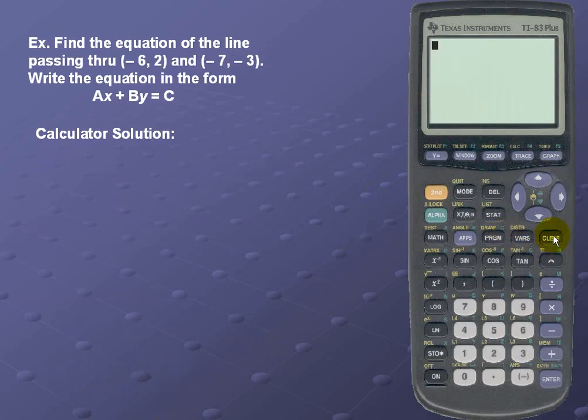Here's another example. Find the equation of the line that passes through (-6, 2) and (-7, -3). Here we'll write the equation in standard form, which is Ax + By = C. So here's the calculator solution.